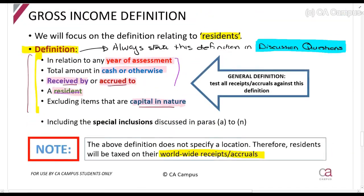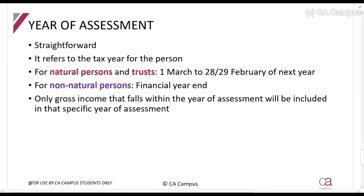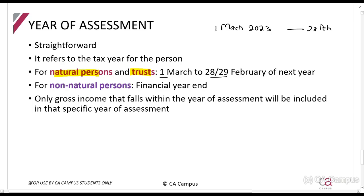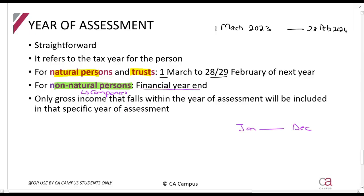The first element of the definition is 'year of assessment' — it basically means you have to include the gross income in the year in which it took place. For natural persons and trusts, your tax year runs from the 1st of March until the end of February — for example, 1 March 2023 to 28 February 2024. For non-natural persons, which are basically companies, it is the financial year end, so their tax year runs from whatever their financial year start to end date is.